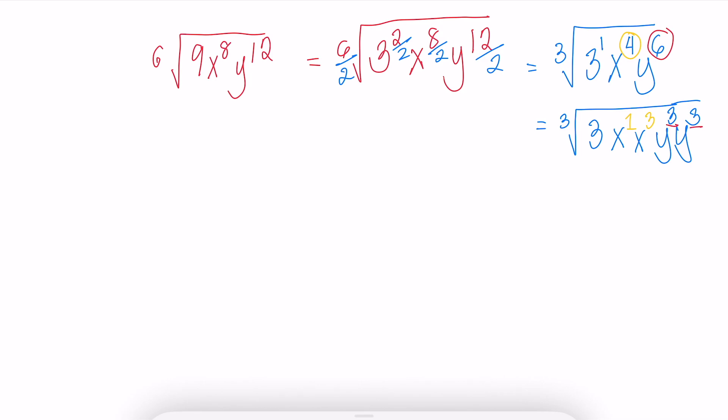Now, all with an exponent of 3 can leave the radical house because it satisfies a cube root. So x, y, y, leaving the 3x inside the cube root.